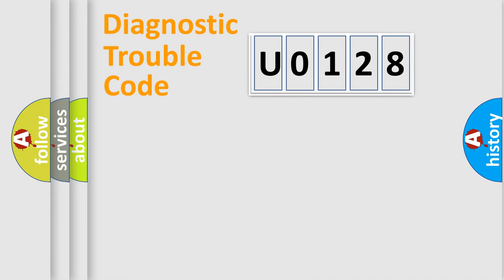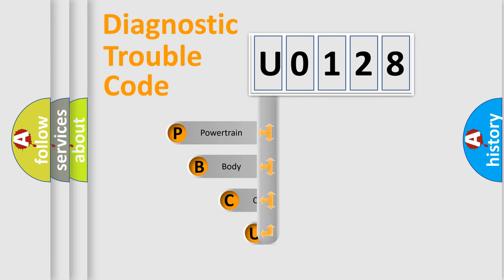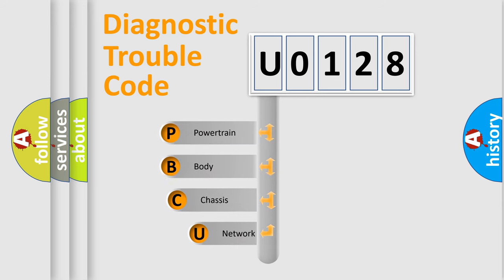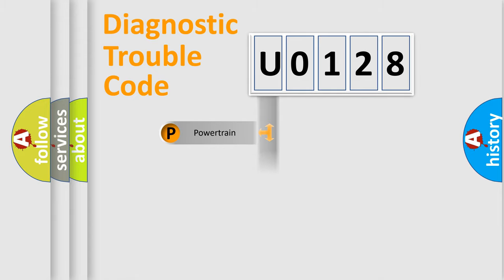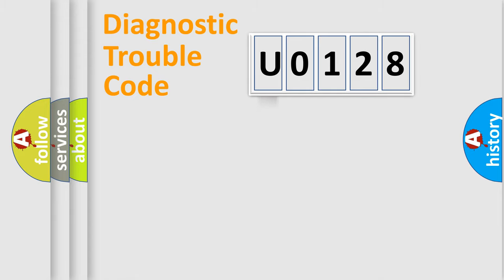Let's do this. First, let's look at the history of diagnostic fault code composition according to the OBD2 protocol, which is unified for all automakers since 2000. We divide the electric system of automobile into four basic units: Powertrain, Body, Chassis, and Network.